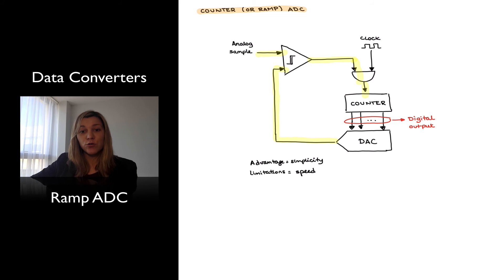We have to allow for 2 to the n counts, and so we can see that as n increases, the number of output states, the digital output states increases by 2 to the n.